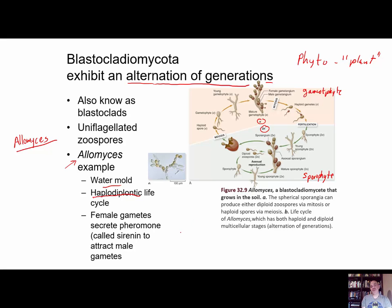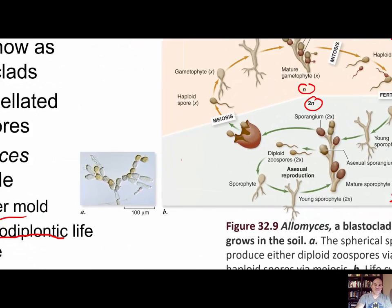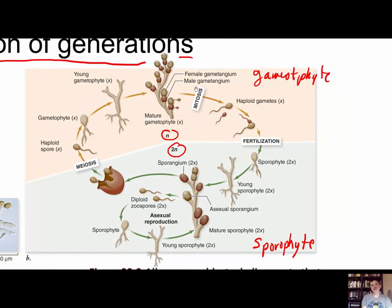For the most part, a fungus is haplontic — the multicellular stage is just haploid. It will produce diploid nuclei but only for a short period of time; it doesn't grow a whole other generation of diploid. But the Blastocladiomycota does. There are two different fungal bodies. Starting with the mature gametophyte, the nuclei are already haploid (one set of chromosomes, N). Two kinds of structures produce gametes.